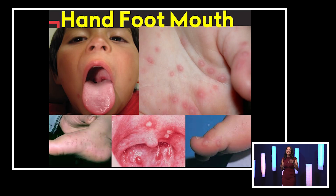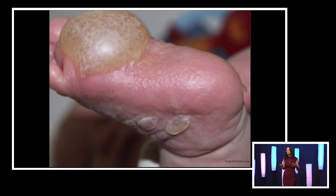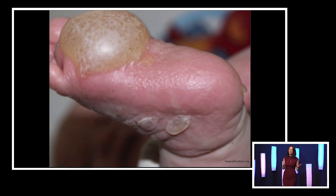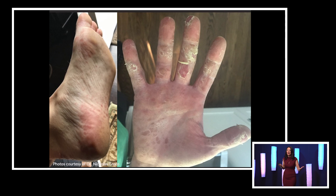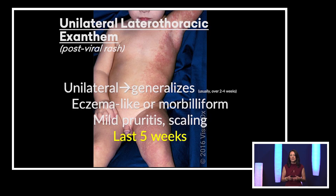Hand, foot, and mouth is another enanthem we see, and you particularly want to look inside the mouth. This can help reassure you, especially with the strain currently circulating in the United States — Coxsackie enterovirus A6. This rash can look really impressive. Patients can have bullous lesions and can have pretty extensive exfoliation. A colleague actually had to call out of work because he had such significant exfoliation he couldn't intubate.